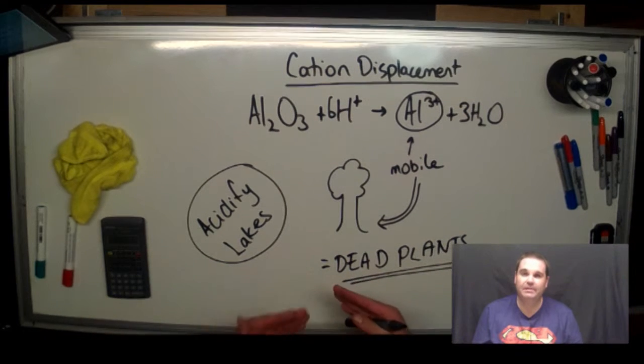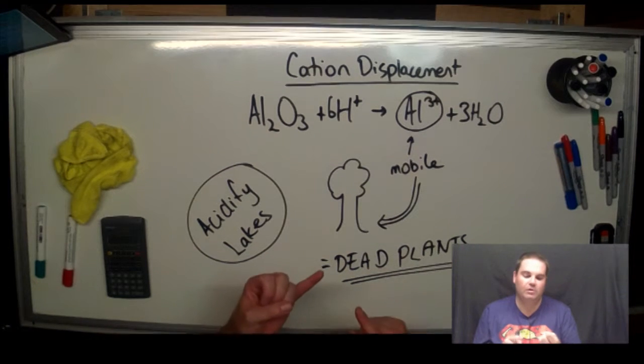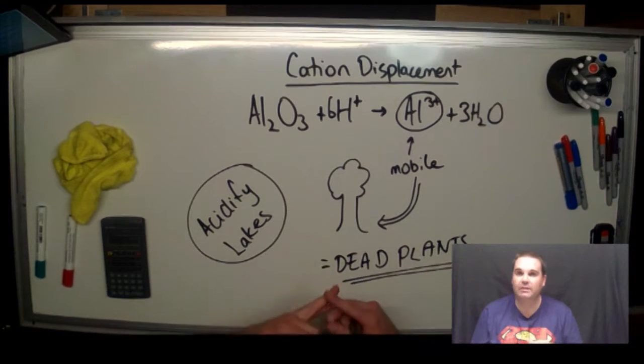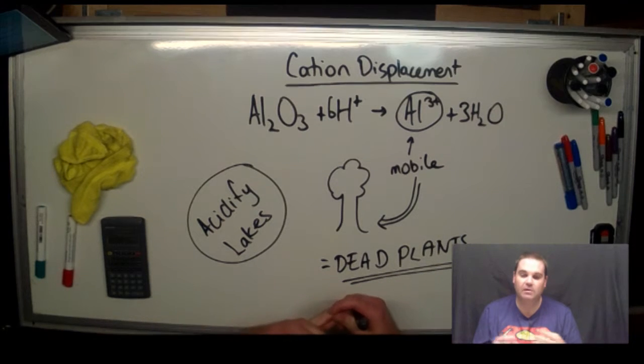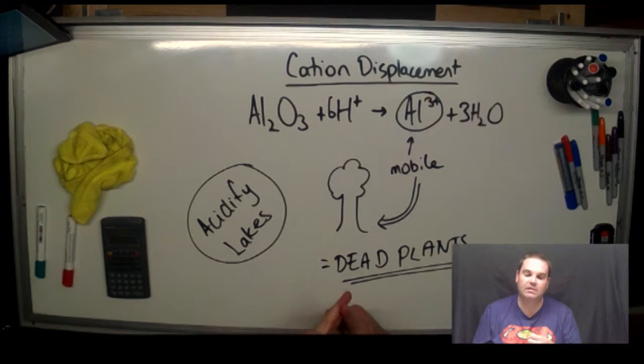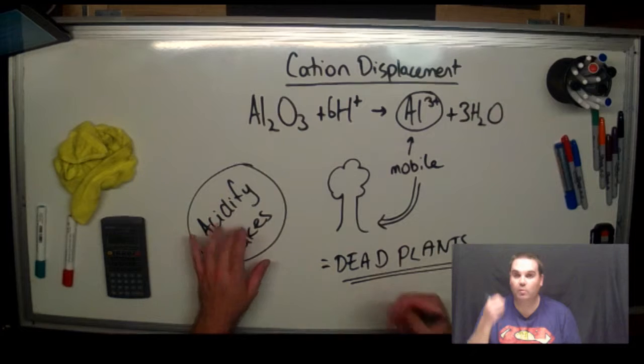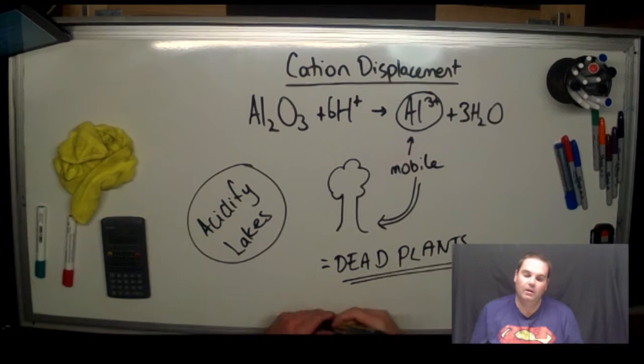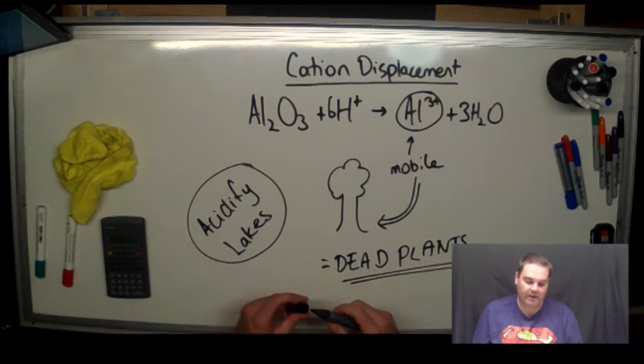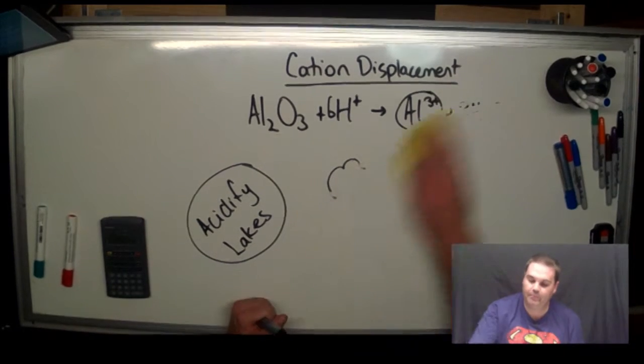So that's acid rain. pH below 5.6 caused by oxides of nitrogen and sulphur in the air. They make very strong acids, lower the pH. They destroy marble statues, they corrode metal structures, and they release toxic cations from the soil and acidify waterways. Very bad. How we can combat them is by stopping the pollutants going up into the air.